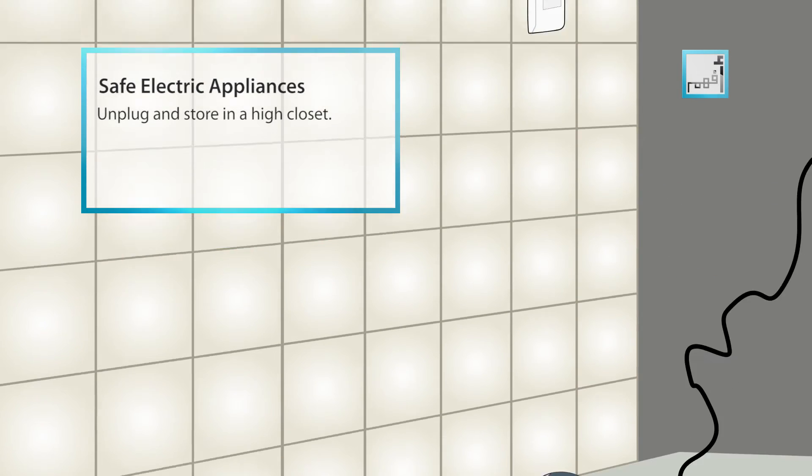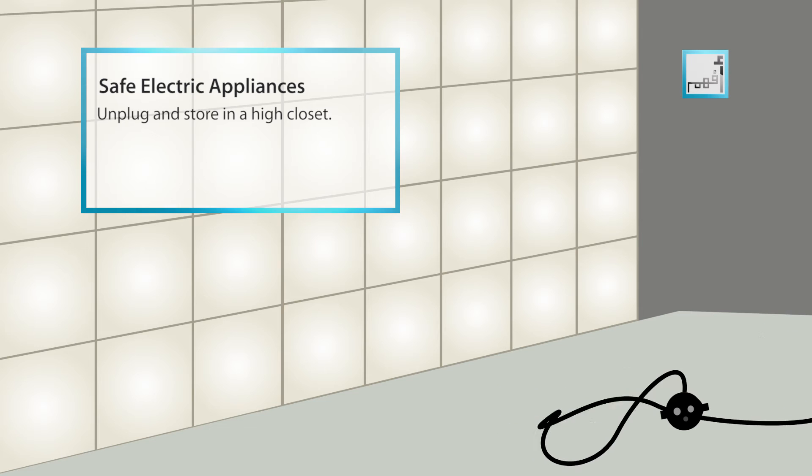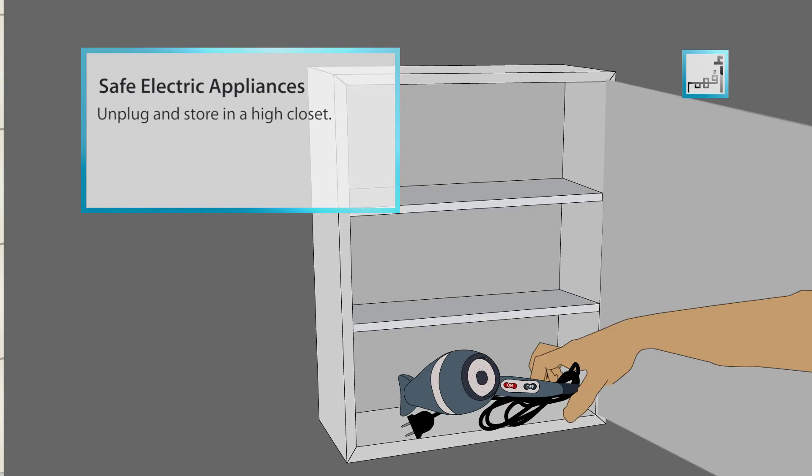Unplug all hair dryers, curling irons, and electric razors when not in use, and store them in a high cabinet.